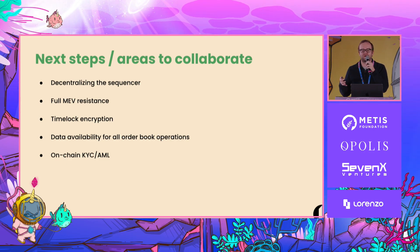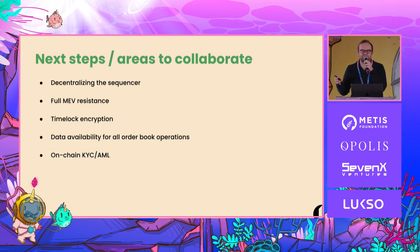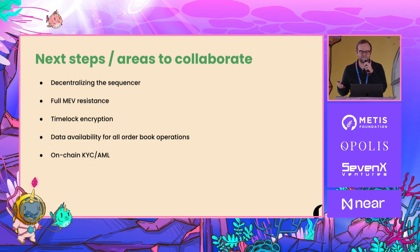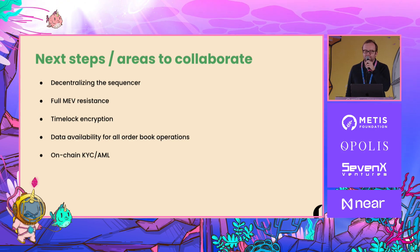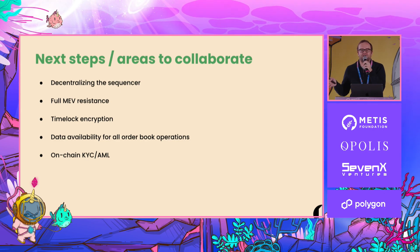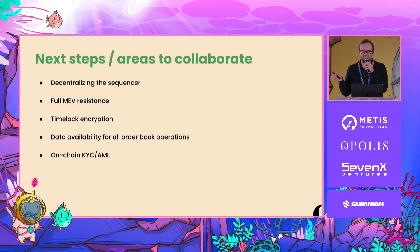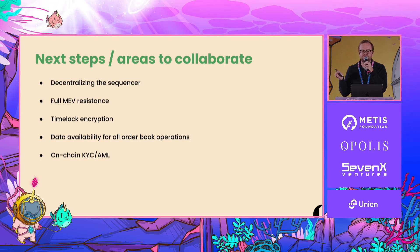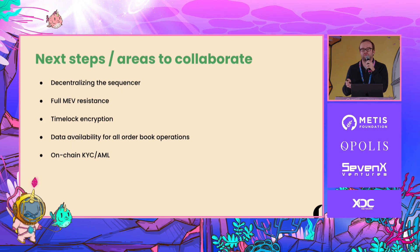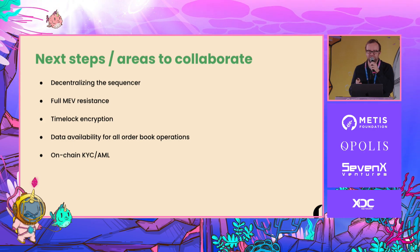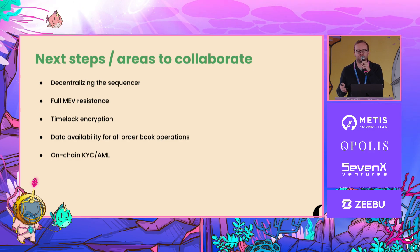Some really big problems to tackle next: one is decentralizing the sequencer. A lot of rollups are working on this, and an app-specific rollup like ZK Lighter would eventually need to decentralize the sequencer. We're actually working on this next because the sequencer already has these nice properties around verifiable matching to prevent any kind of MEV even at the millisecond level. Introducing things like time lock encryption in a decentralized sequencer context will be a hard problem. If there are folks working on sequencer decentralization, MEV resistance, or time lock encryption, we'd love to collaborate.